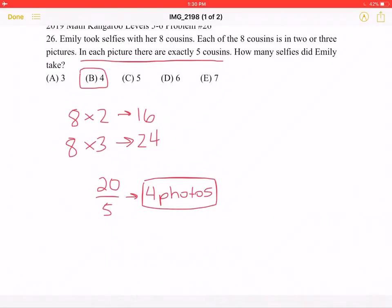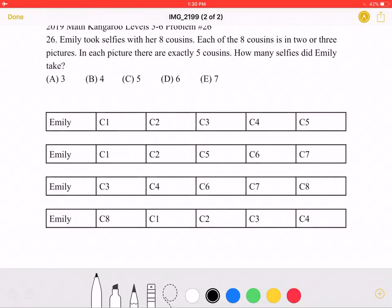However, as a visual, we can look at this. This is one of the ways that these four photos could be arranged with the cousins. Each cousin is either in two or three photos, just as it says in the problem, and each photo has five cousins and Emily in it.